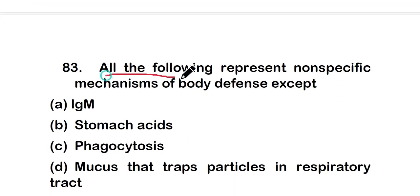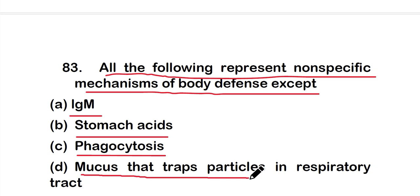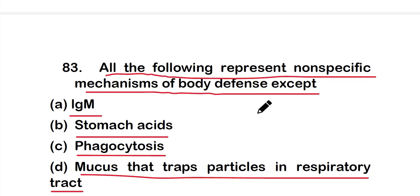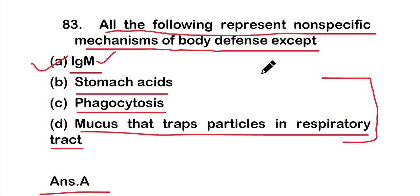Question number 83: All of the following represent non-specific mechanisms of body defense except — option A: IgM, option B: stomach acids, option C: phagocytosis, option D: mucus that traps particles in the respiratory tract. The right answer is option A — IgM represents a specific kind of immune response, while the others are non-specific types of body defense.